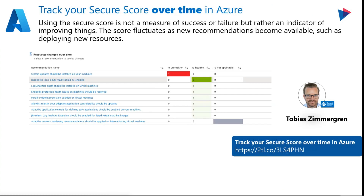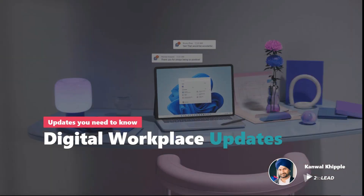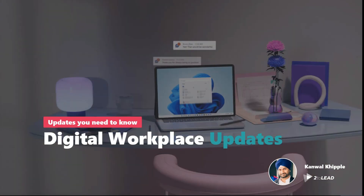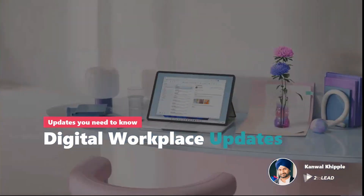Community highlight from Tobias Zimmermann — a huge fan of his work and his blog. He recently announced, about a month ago, the ability to track your secure score over time in Azure, walking through the entire process. The score fluctuates as new recommendations become available, so being able to see how your secure score is tracking is very helpful. And these are about two dozen updates to the digital workplace that affect you and your day-to-day productivity.